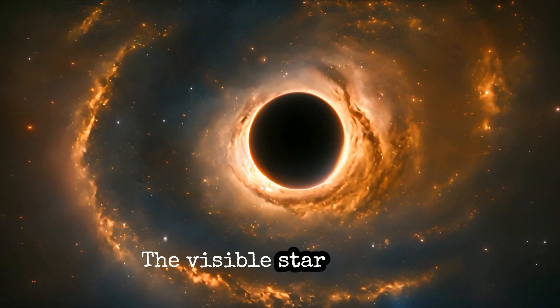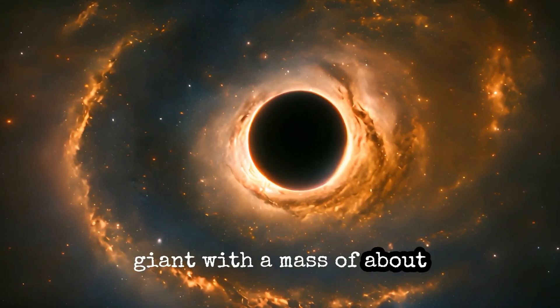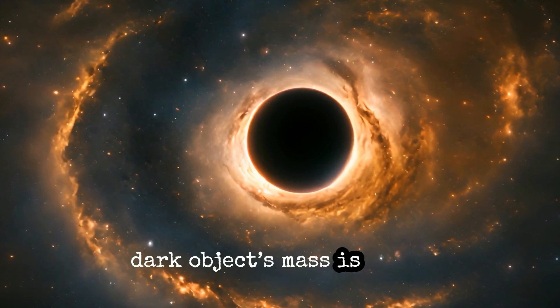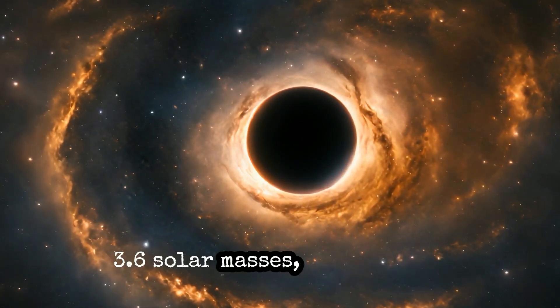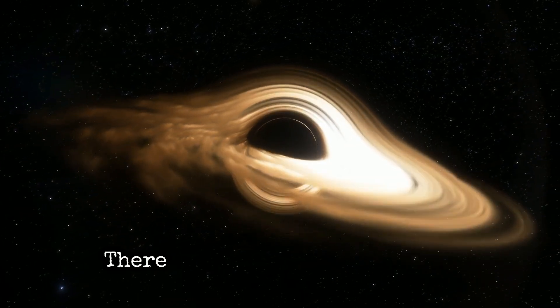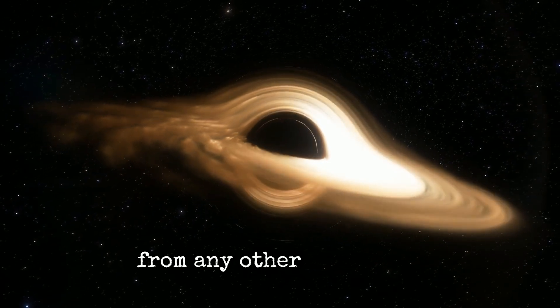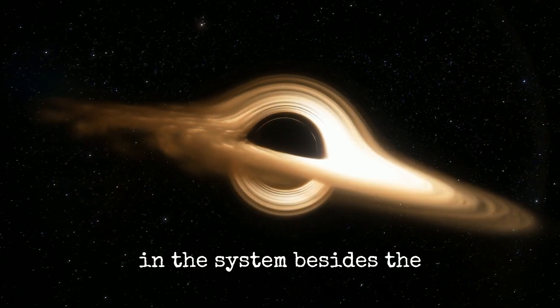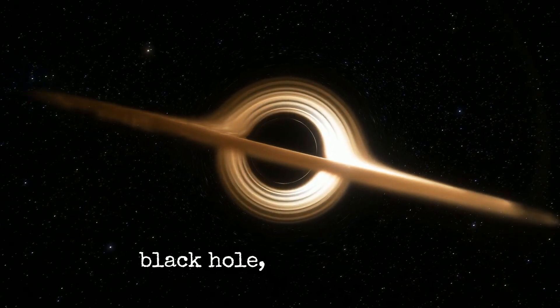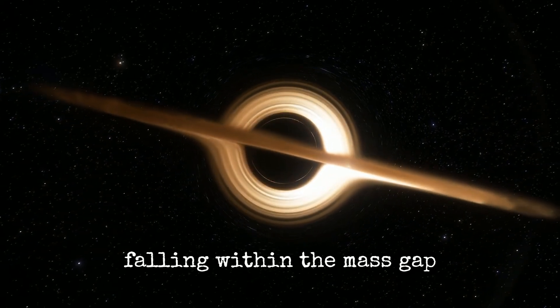The visible star is a red giant with a mass of about 2.7 solar masses, while the dark object's mass is about 3.6 solar masses, with a range of 3.1 to 4.4 solar masses. There is no light contribution from any other component in the system besides the red giant, proving that the dark companion is a black hole, with its mass falling within the mass gap.